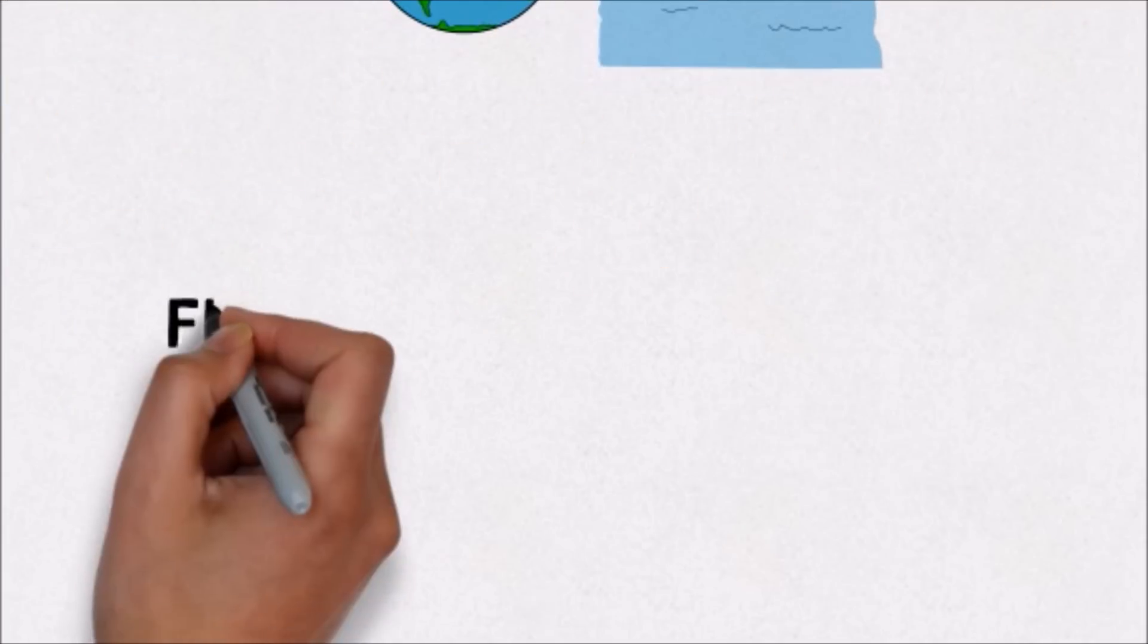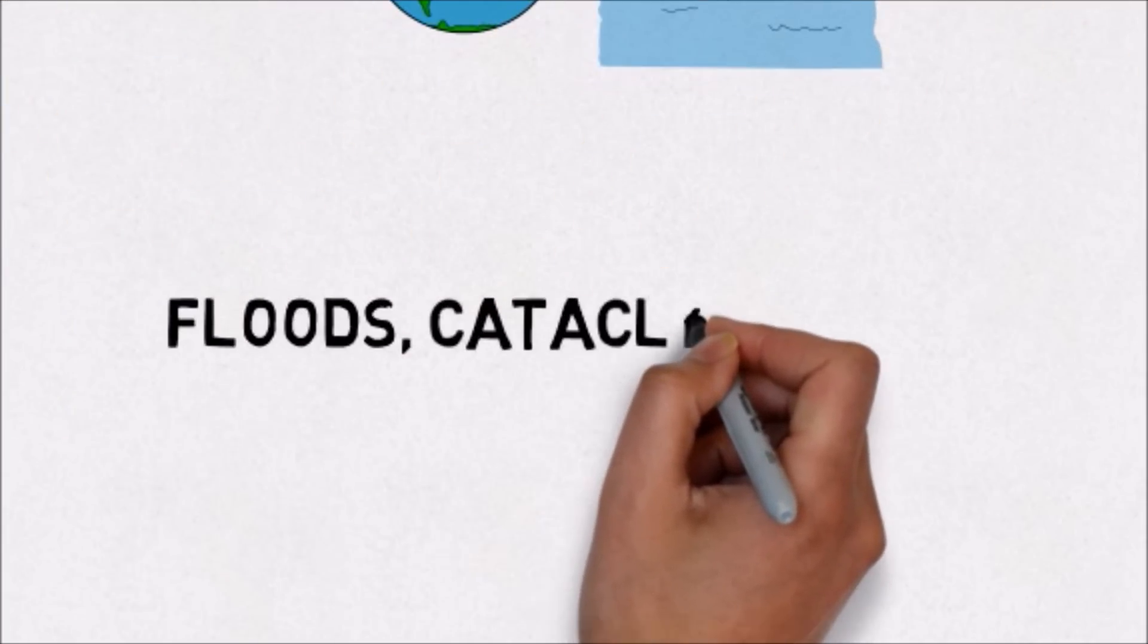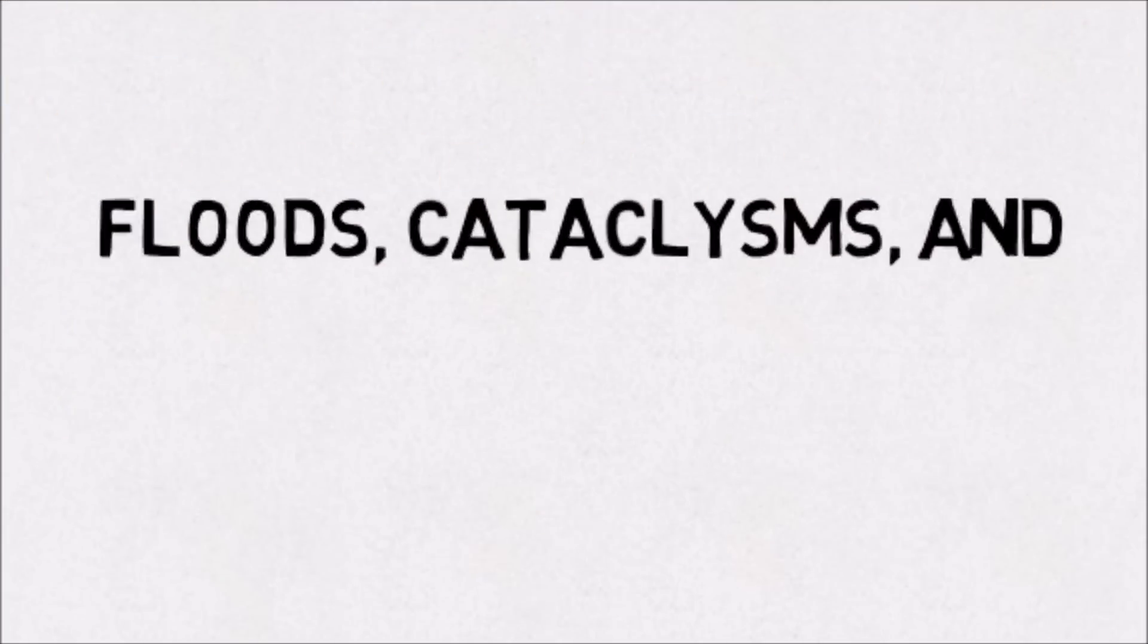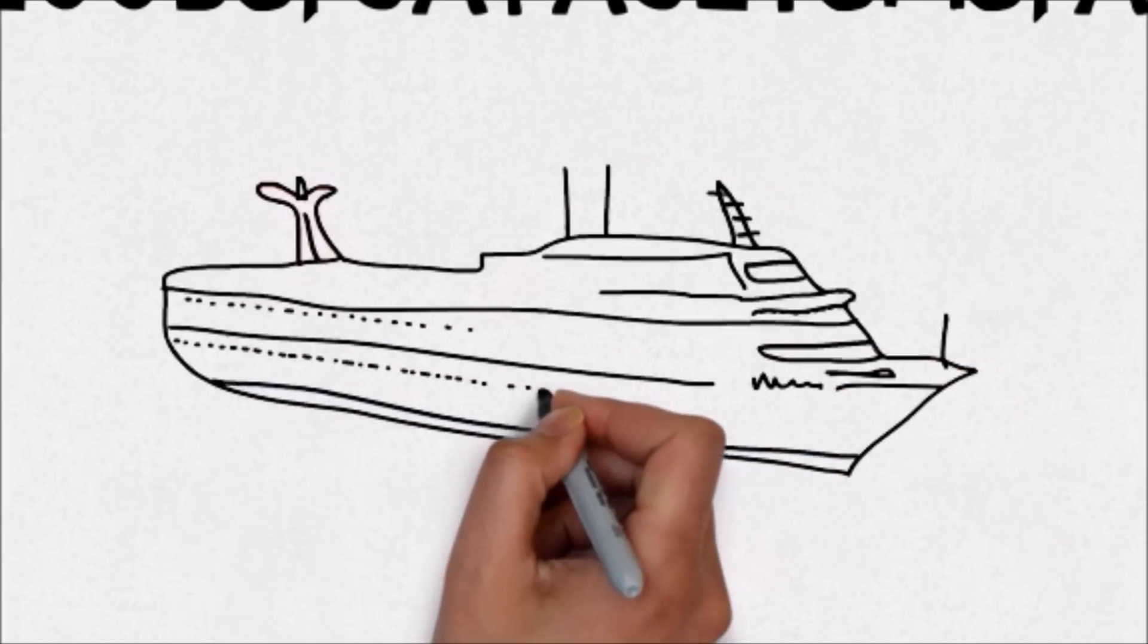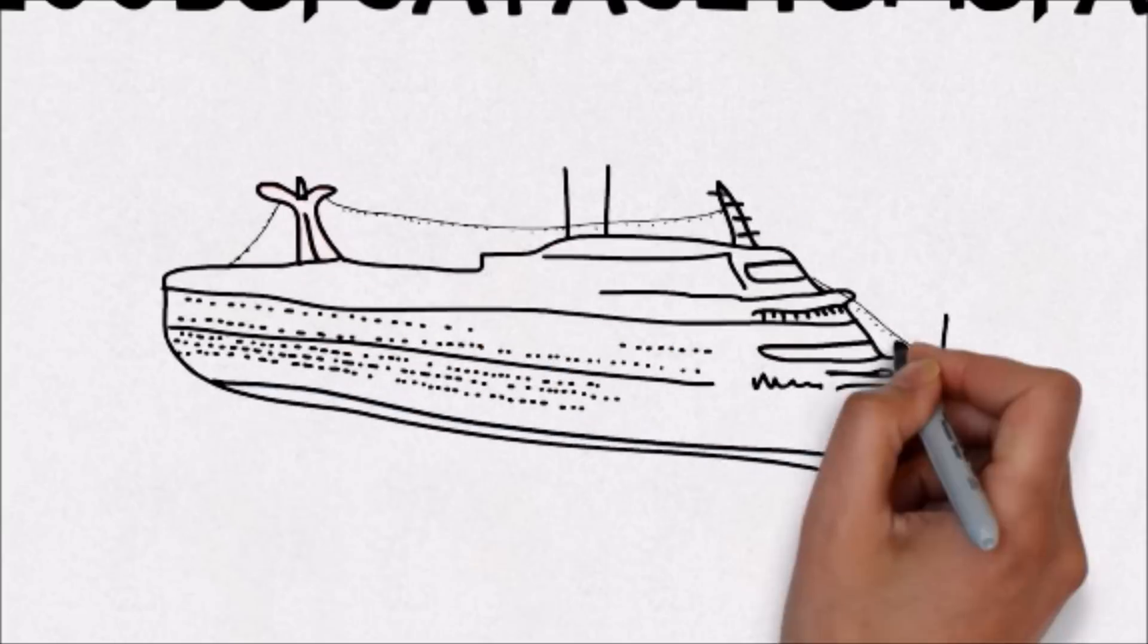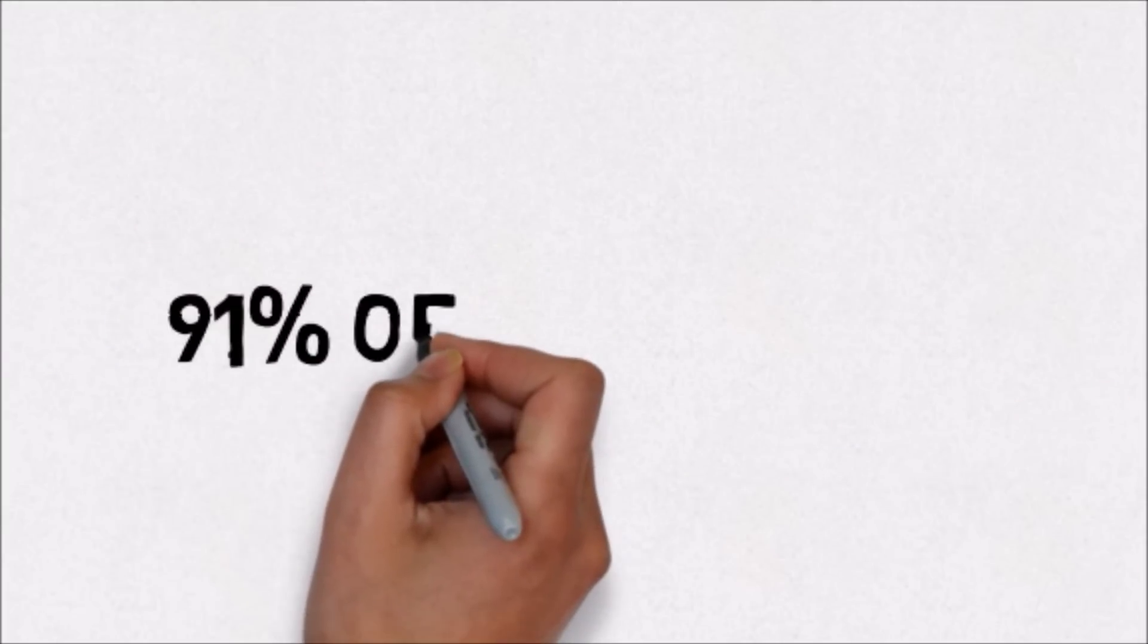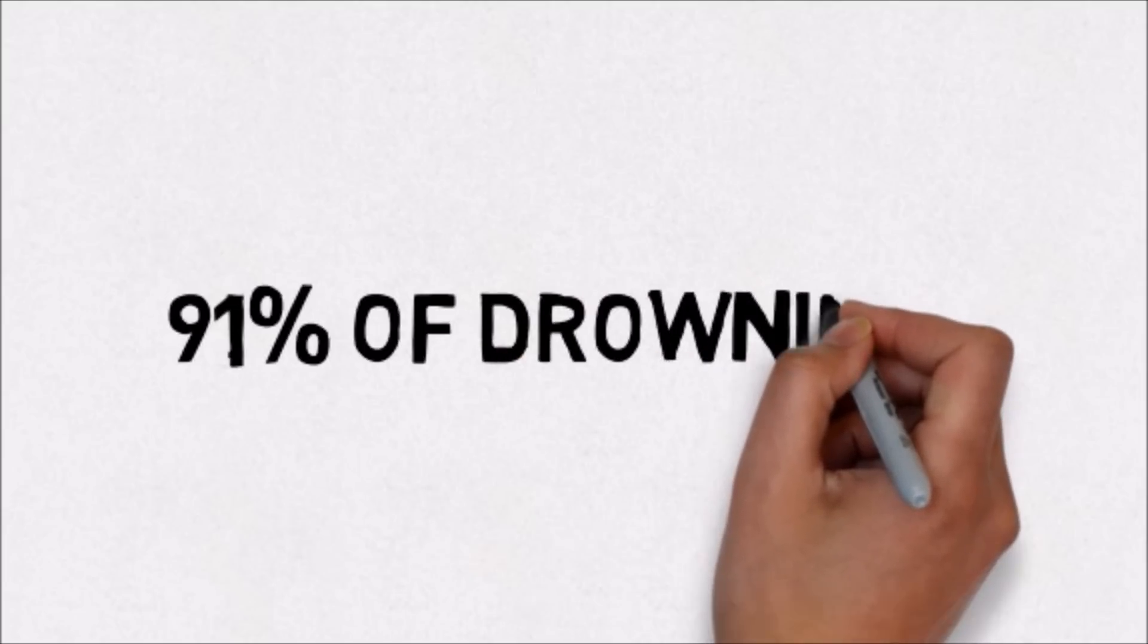Also, due to the way the data is catalogued, global numbers exclude drownings due to floods, cataclysms, boating, and water transport mishaps. Ninety-one percent of drownings occur in undeveloped, low-income countries.